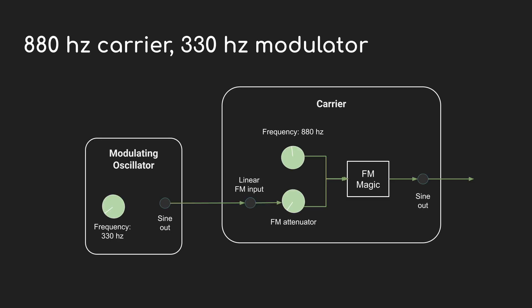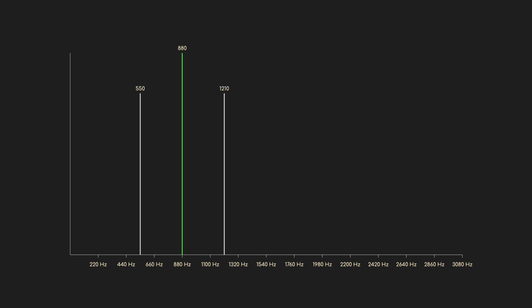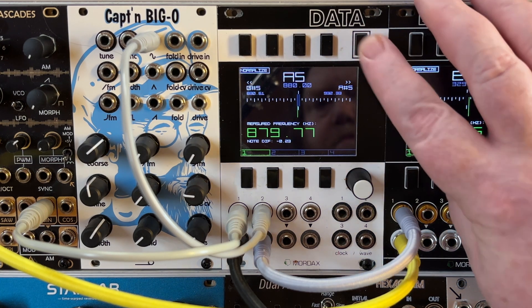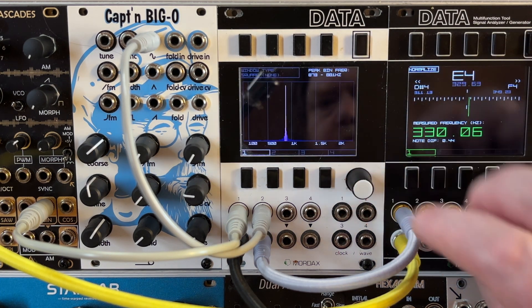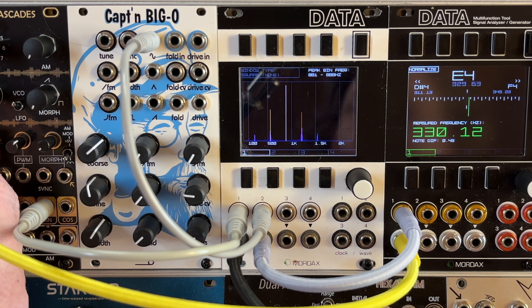Here we have a patch where the carrier frequency is set to 880 Hz and the modulator is 330. Remember our rules for where sidebands appear — they occur at intervals of the modulator frequency. So we expect the first set of sidebands to appear at 550 Hz and 1210. That's 330 Hz on either side of 880. Then we expect the next set to appear at 220 Hz and 1540. I have that set up here with the Cascades as a carrier at 880 Hz and the Captain Big-O as the modulator set to 330. I'll switch to the spectrum view and start bringing up the modulation — and yeah, there are those two sets of sidebands right where we expect them.